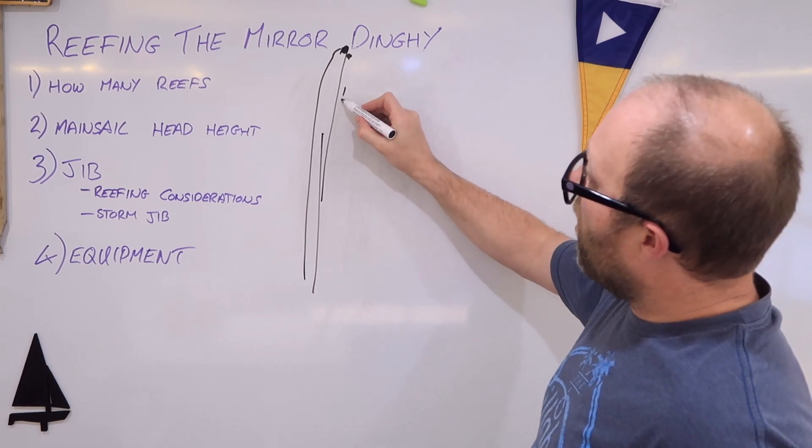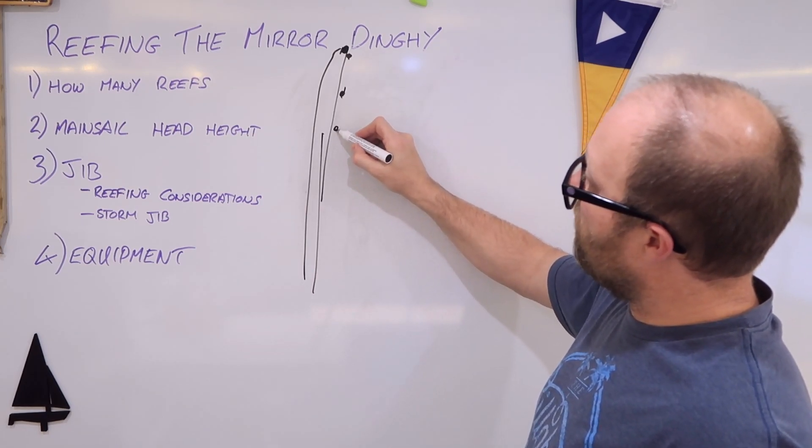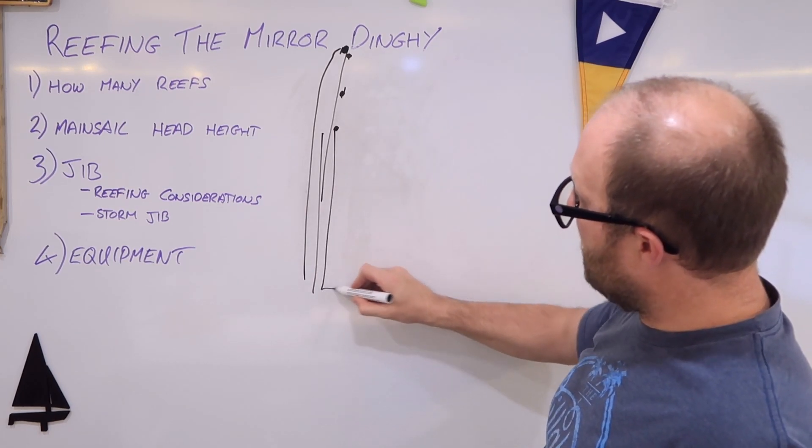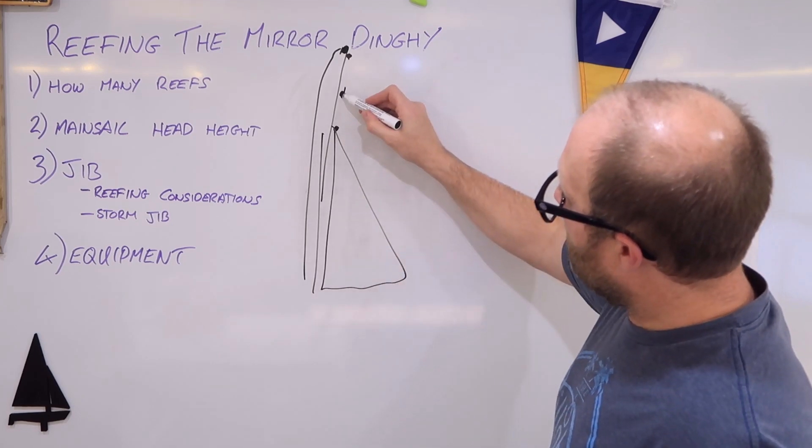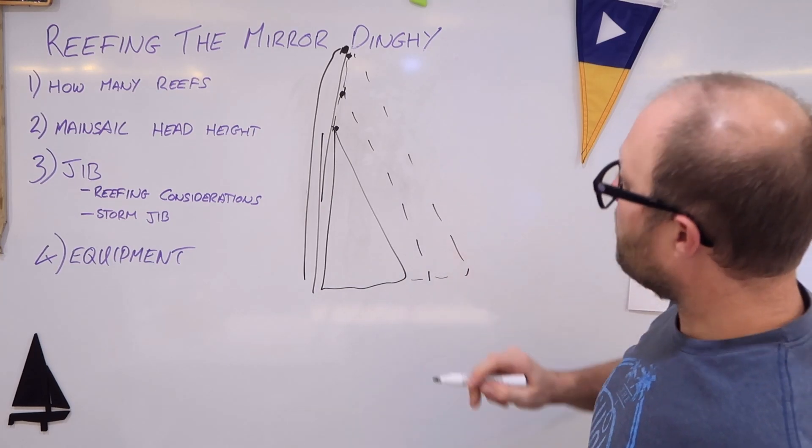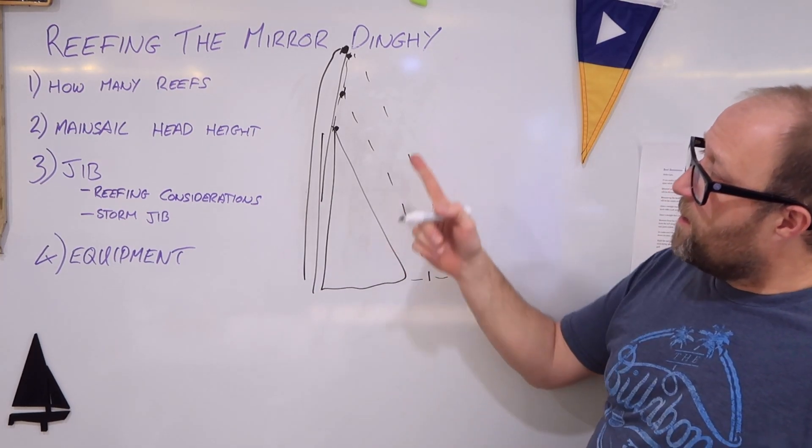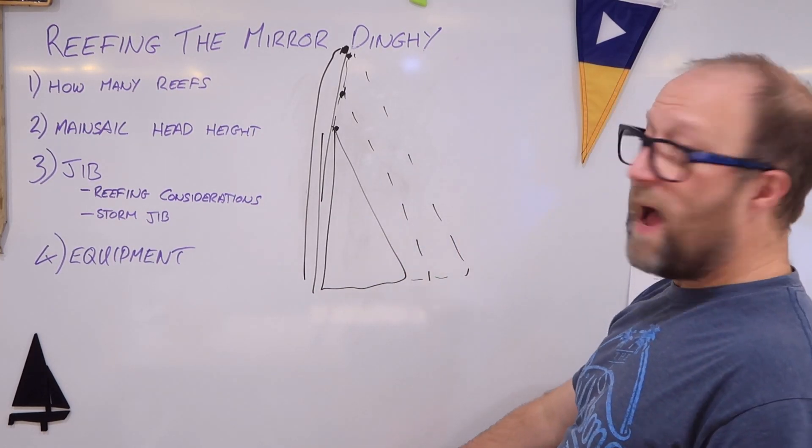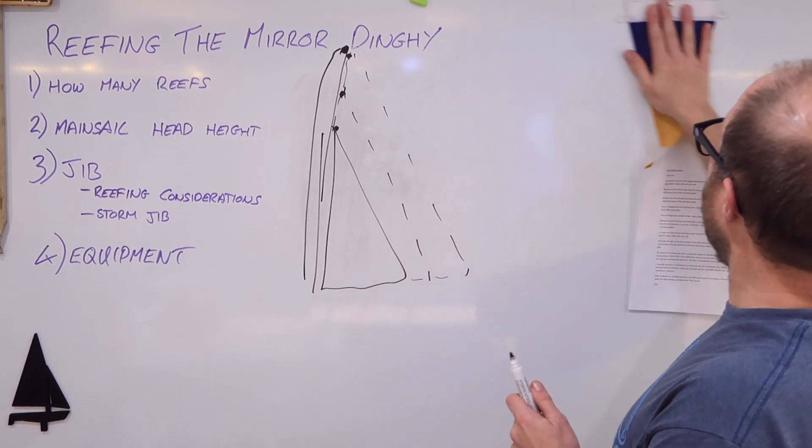And the problem I've got with that system is that the mirror dinghy is not a Bermuda rig. It's actually a gunter rig that has a gaff. So I've either got to have a system which will allow me to do the same thing and allow me to bring the sail head up and down. So for full sail plan, it would be here, the head of the sail. Reef number one, it may be here. Reef number two, maybe right down here like this or like that or like that.